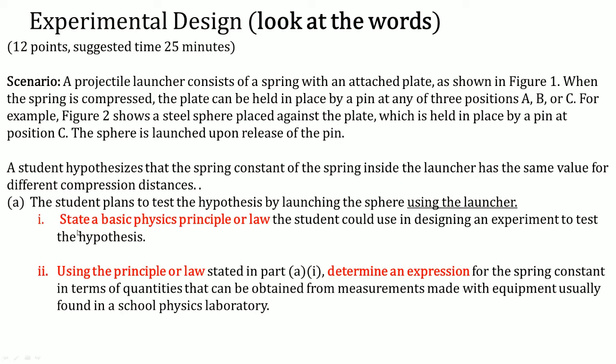Part A says to state a basic physics principle or law that the student can use in designing this experiment to test the hypothesis, and two, to use that law to determine an expression. Stating a basic principle or law mostly comes from conservation of energy, conservation of momentum, Newton's law, or Hooke's law. Once you have an idea of it, you can write an expression by solving for a certain variable — in this case, the spring constant K.